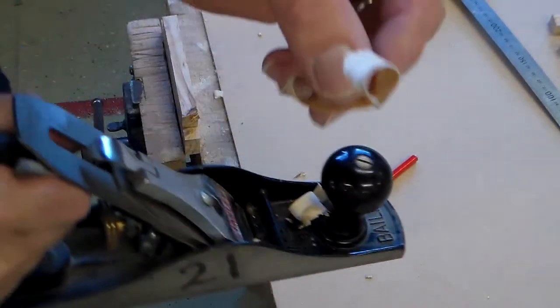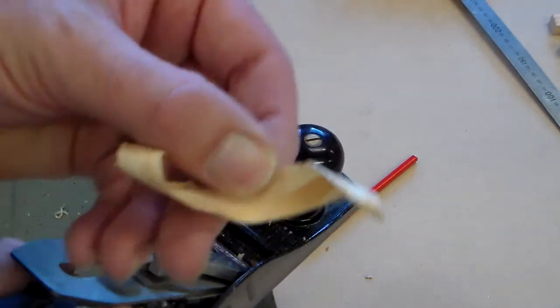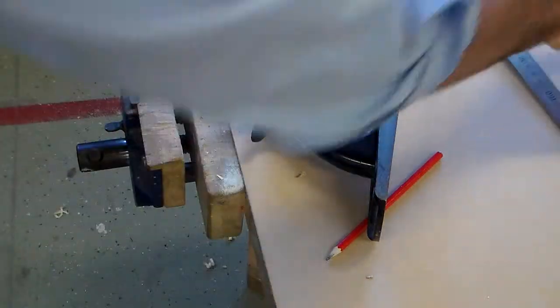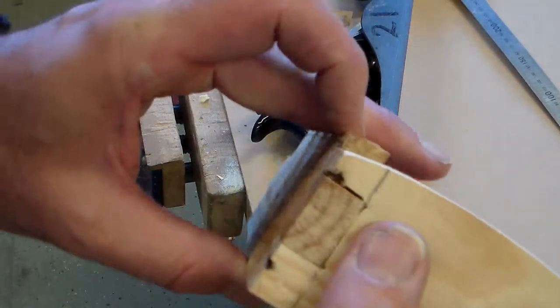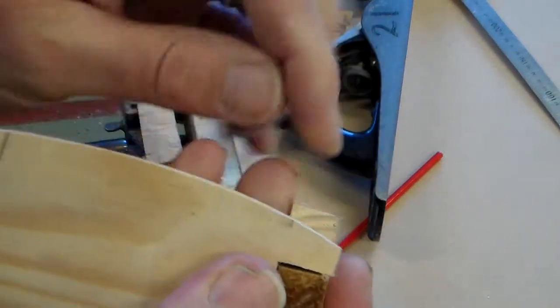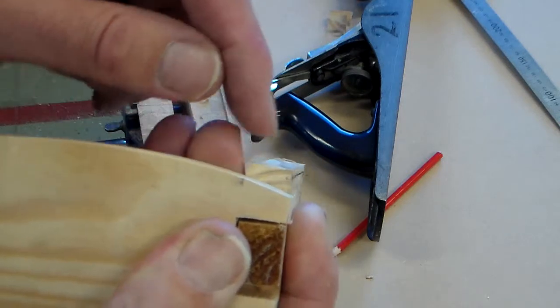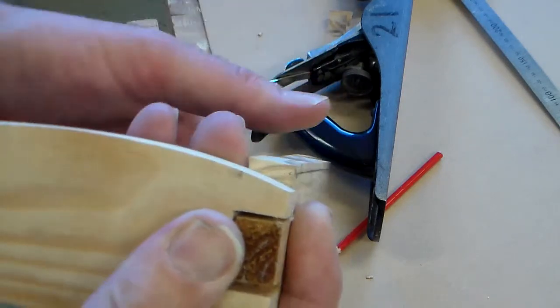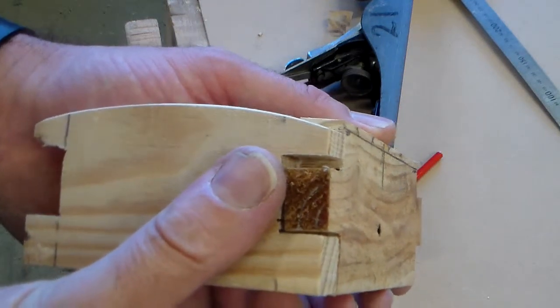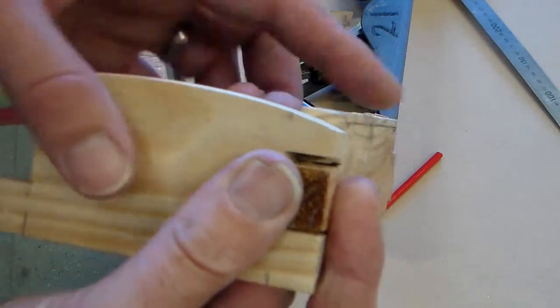And you can see that the plane takes off thin shavings of wood and what we need to do here is just keep checking that we've removed it. If you can see there I'm actually deliberately angling the plane so that I can try and get an angle and just plane off a little bit, check it, plane off a bit and check it until the two sides match the curve that you've cut on the ends.